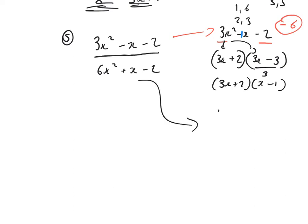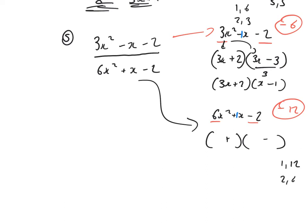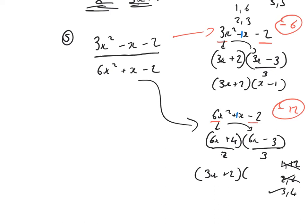Now tackle the denominator: 6x squared plus x minus 2. 6 times minus 2 is minus 12. Two numbers to multiply to give minus 12 and add to give 1. The product is negative, so signs will need to be different. Pairs for 12: 1 and 12, 2 and 6, 3 and 4. The pair to give 1 in the middle is definitely 3 and 4 — so plus 4 and minus 3. Drop 6x into both brackets. First bracket: take out a common factor of 2 — 2 into 6x goes 3x and 2 into 4 goes 2. Second bracket: take out a common factor of 3 — 3 into 6x goes 2x and 3 into 3 goes 1.